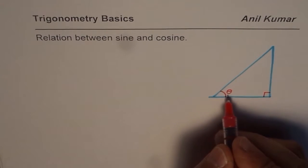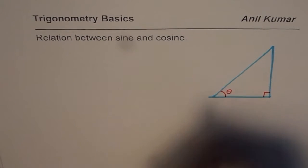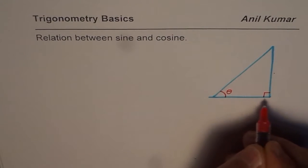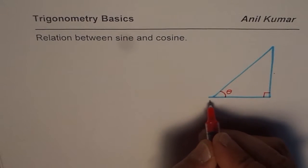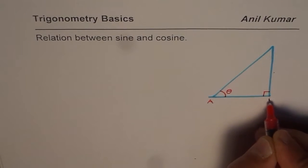When that is the angle theta for us we will call this side as the opposite side and this one as the adjacent. So let me label this triangle as triangle ABC.